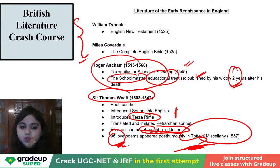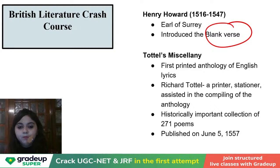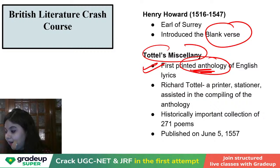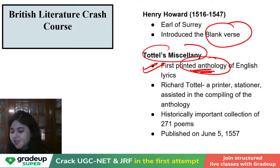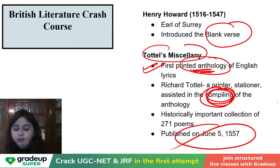Henry Howard is the Earl of Surrey. He is introducing blank verse, whereas Wyatt is introducing the sonnet form and Terza Rima. Both Wyatt and Surrey together are responsible for the sonnet form, Terza Rima, and blank verse. Richard Tottel is compiling the anthology, which is finally getting published in 1557. Tottel's Miscellany is the first printed anthology of English lyrics — the first attempt made to anthologize and put relevant poems together.